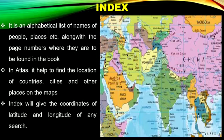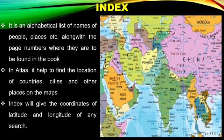Index. An index is an alphabetical list of names of people and places, along with the page numbers where they are to be found in the book. In an Atlas, it helps to find the location of countries, cities, and other places on the map. The index will give the coordinates of latitude and longitude of any search.